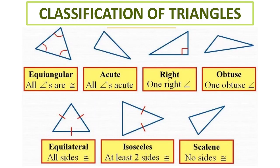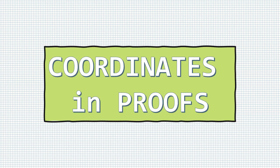Aside from quadrilaterals, you should be particular as well with the classification of triangles, so that if you encounter proofs regarding equiangular, equilateral, or isosceles triangles, you know what particular properties to consider when proving an isosceles triangle, equilateral triangle, etc.